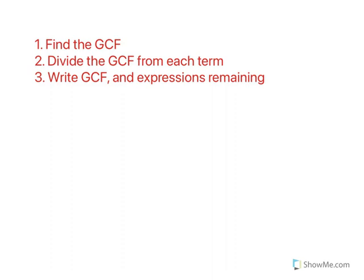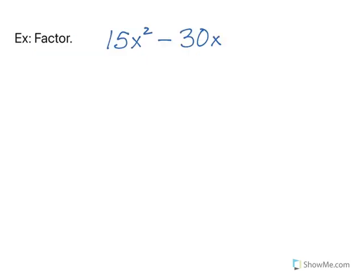Now there are other videos that I have on finding the greatest common factor, so if you need help with that, pause this, go watch one of those videos, and then come back. So we're going to factor 15x squared minus 30x. So again, first thing is we have to find the greatest common factor.